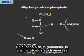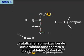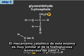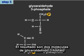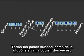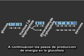In step 5 of glycolysis, the enzyme triose phosphate isomerase catalyzes the isomerization of dihydroxyacetone phosphate into glyceraldehyde 3-phosphate. The catalytic mechanism of this enzyme is very similar to that of phosphoglucose isomerase back in step 2. The result is two molecules of glyceraldehyde 3-phosphate. All of the subsequent steps of glycolysis will occur twice, once for each molecule of glyceraldehyde 3-phosphate. These are the energy generation steps of glycolysis.